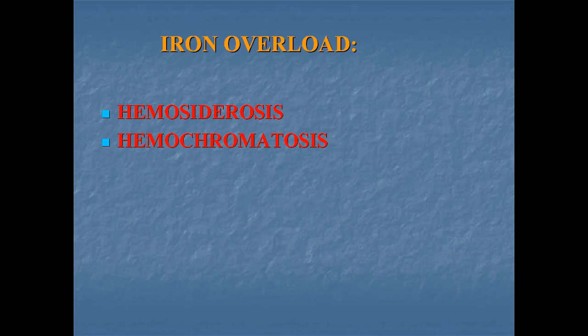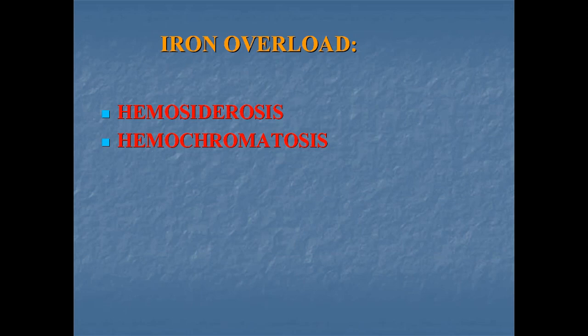Hemosiderosis is commonly seen in some African countries where cooking is done in iron utensils, which increases dietary iron intake. Hemochromatosis is a clinical condition in which excessive deposits of iron in the form of hemosiderin are present in tissues, which develops injury to the involved organs. Iron is deposited in the liver, pancreas, heart, adrenal gland, testis, ovaries, pituitary gland, and kidney. Patients may develop hepatic, pancreatic, and cardiac insufficiency, and hypogonadism associated with impotency in males.